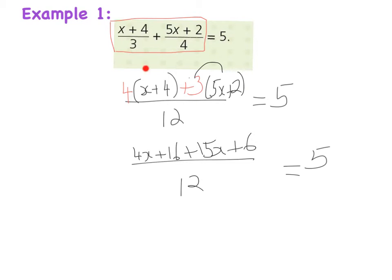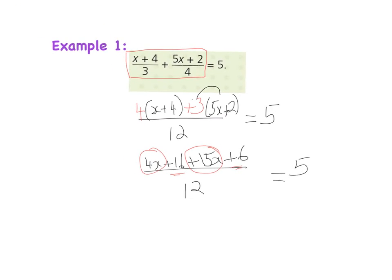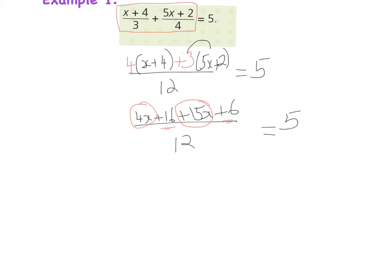At this point, once I've worked out my brackets, I need to group the top line — bring my x terms together and my numbers together and simplify. I have 4x and 15x, and 16 and 6. I still have 12 as my common denominator, and 4x plus 15x gives me 19x.